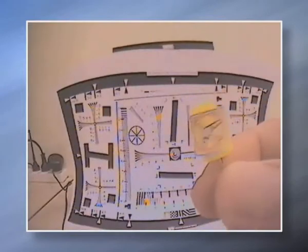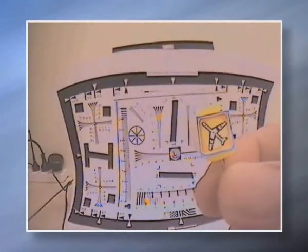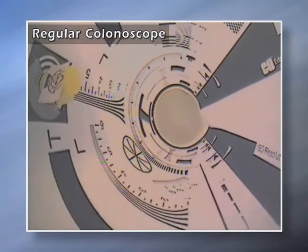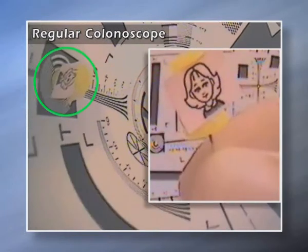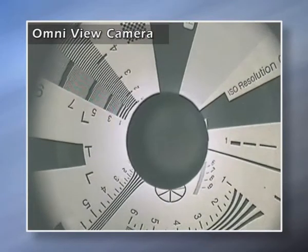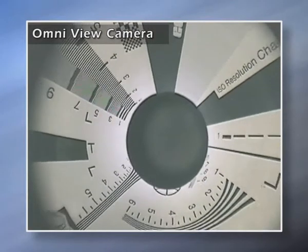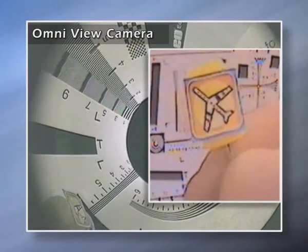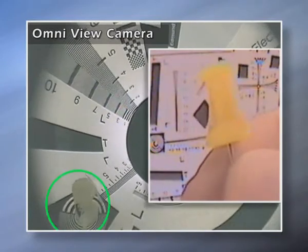In this demonstration, the pin represents a mucosal fold. As a regular colonoscope passes by it, it visualizes only the side facing the scope. But as Aeroscope passes by, its Omniview camera reveals both the facing and reverse sides.